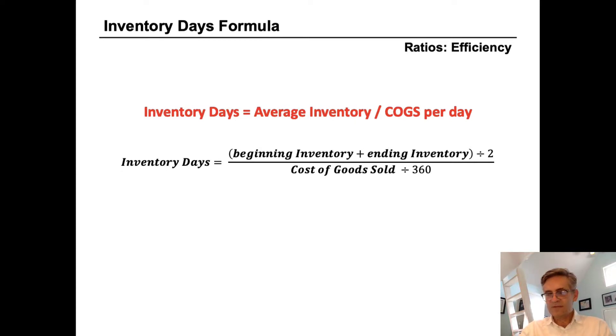So inventory is frozen cash, and the sooner that inventory is sold, the faster it's turned into cash. But it's a balancing act. While too much inventory will tie up cash, too little inventory can result in lost sales because of stock outs.